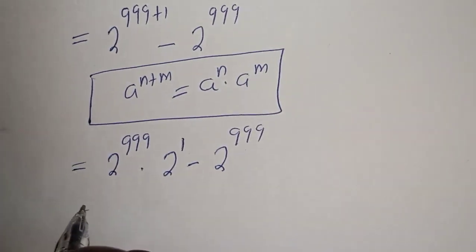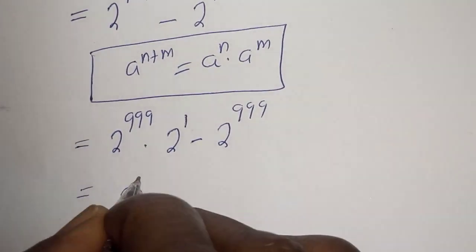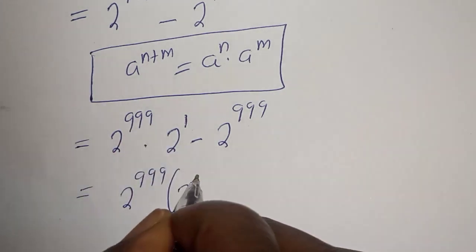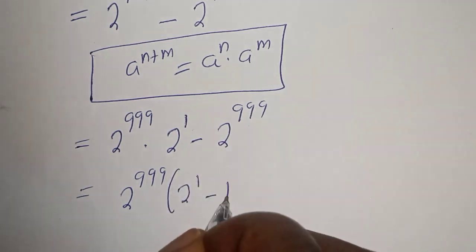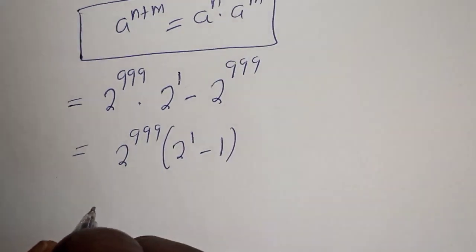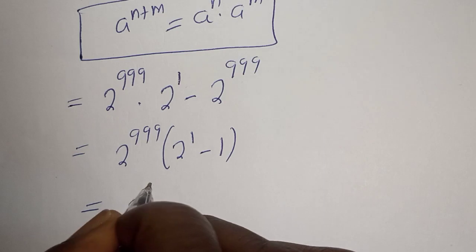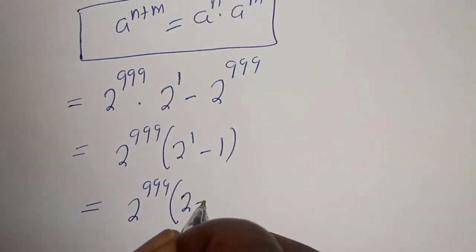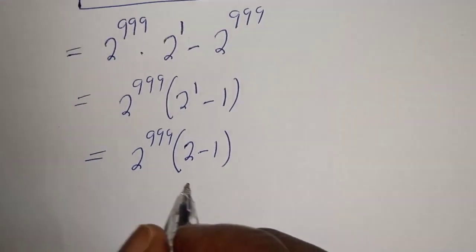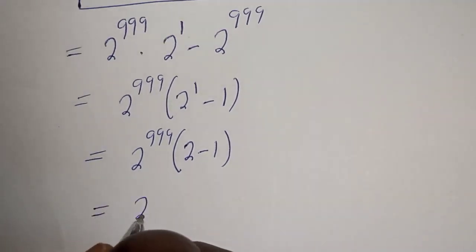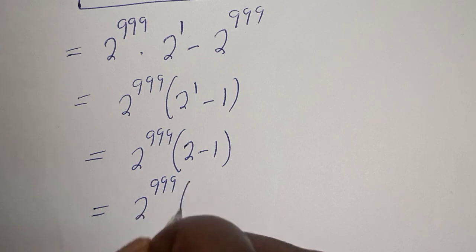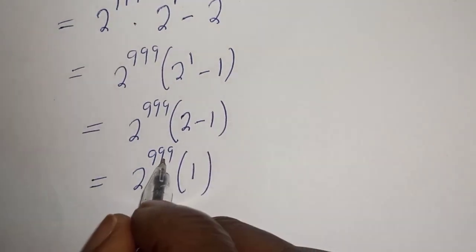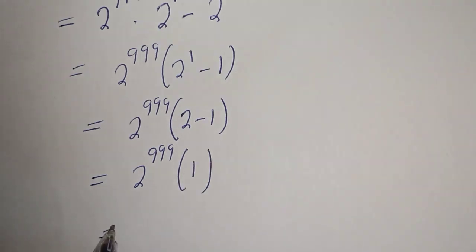You can see that 2 raised to power 999 is common — let's factor it out. This gives 2 raised to power 999 times bracket 2 raised to power 1 minus 1, which equals 2 raised to power 999 times bracket 2 minus 1, which is 1. So multiplying 2 raised to power 999 by 1 gives 2 raised to power 999.